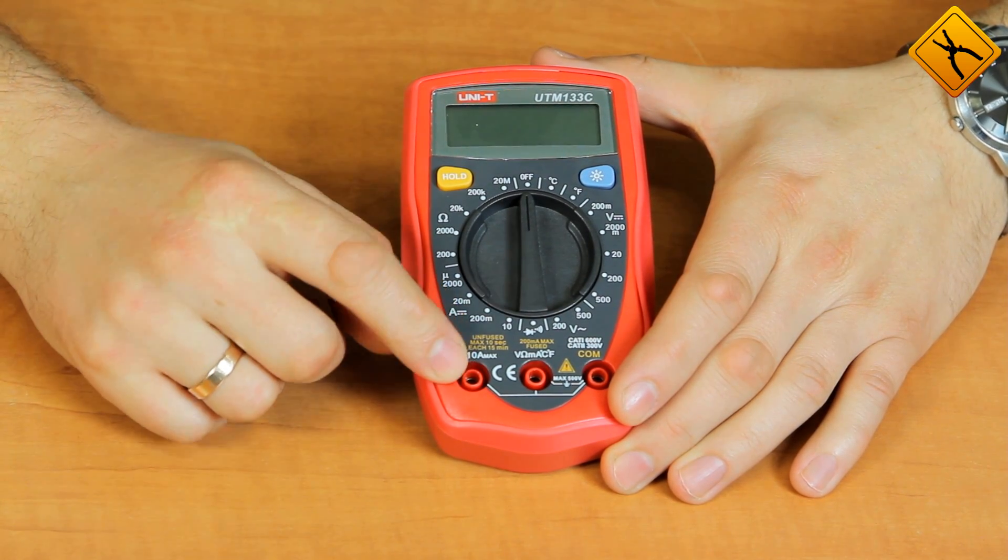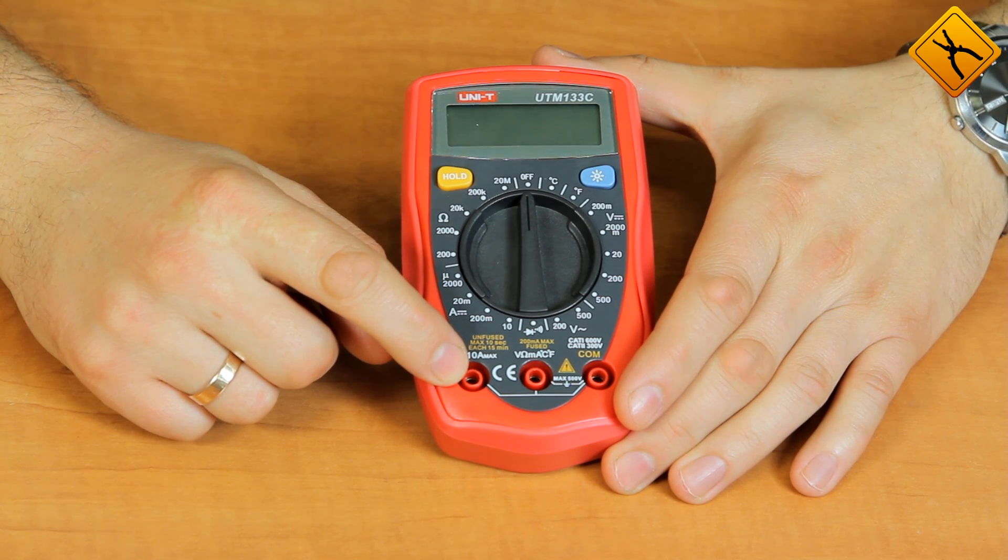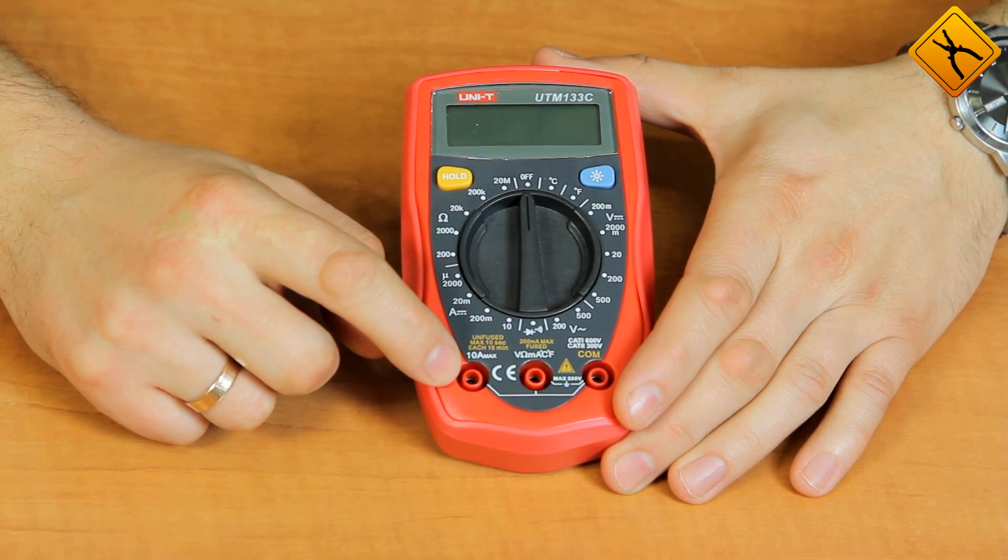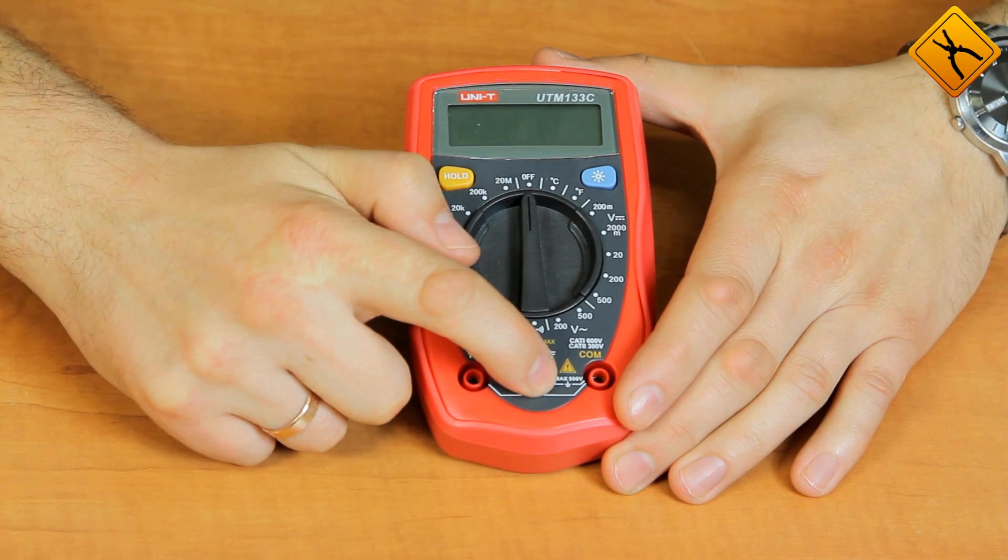10A terminal is used for measuring large currents in 10A range. And for the rest of the functions, you should use the middle connector.